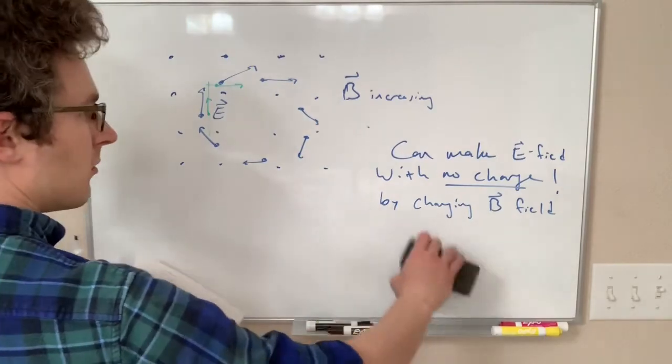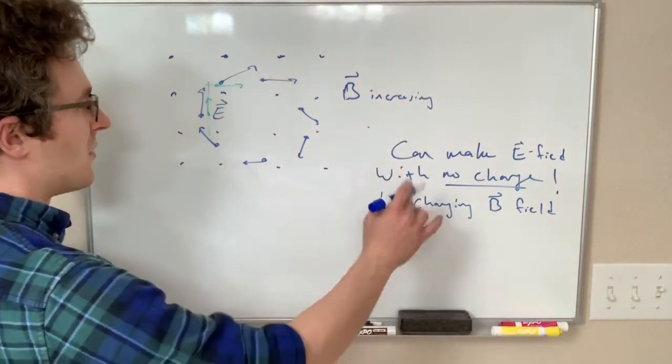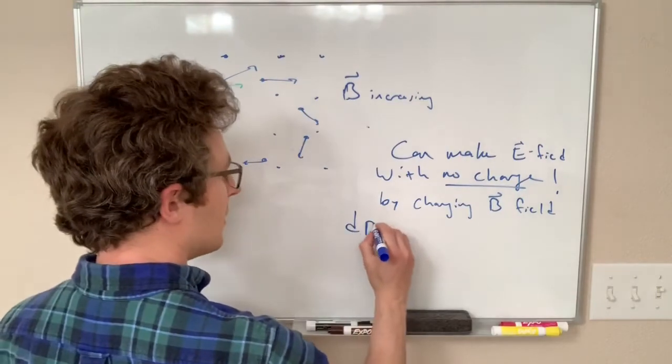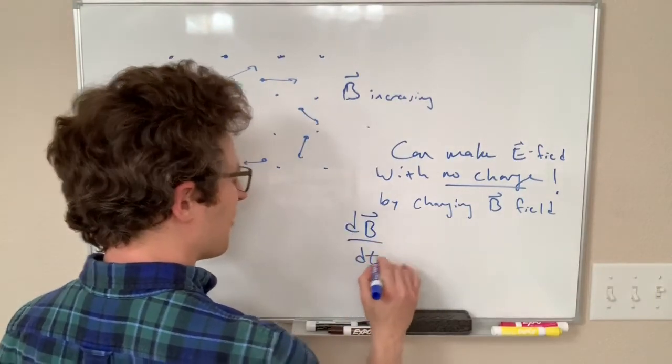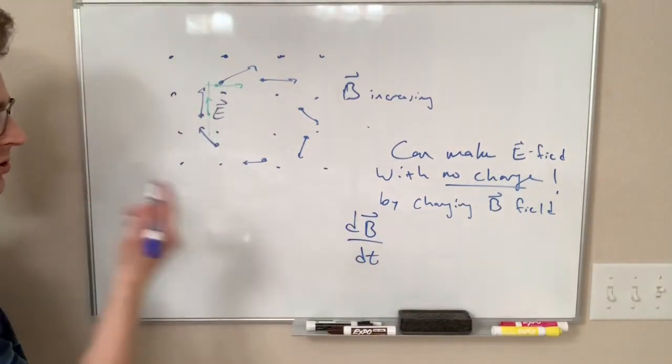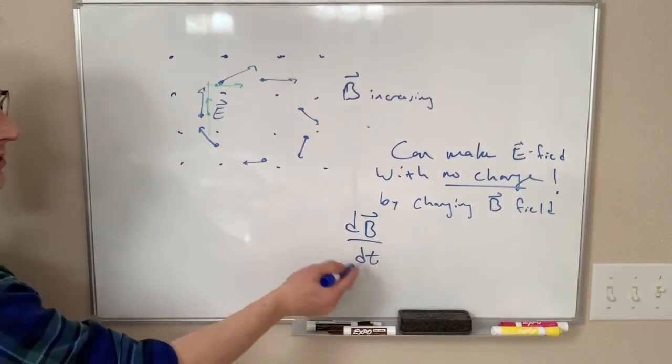All right. So the thing that determines if this E field is created is the time derivative of the magnetic field. So if the magnetic field is constant, if dB/dt is zero, we don't get an electric field.